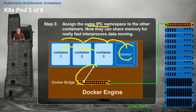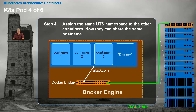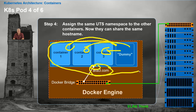Now they're all sharing the same network namespace and the same Interprocess Communications. In this way, we're starting to build the basis of what we would refer to as microservices. In step four — the last modification step — we assign the same UTS namespace to the other containers. Each container takes on the UTS ID of the dummy, meaning they give up their rights to have their own hostname. They're all going to share a common hostname. That's what we want — after all, they're sharing the same IP address, the same network namespace, and the same Interprocess Communications.